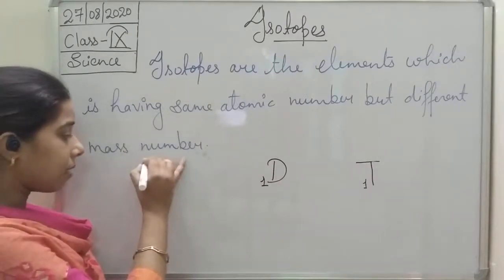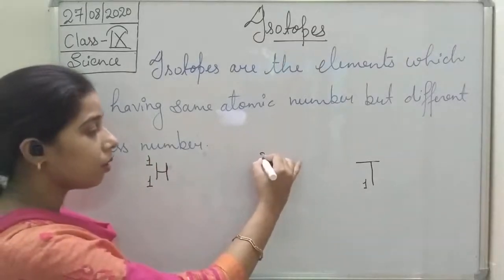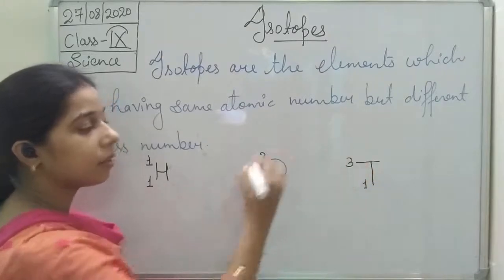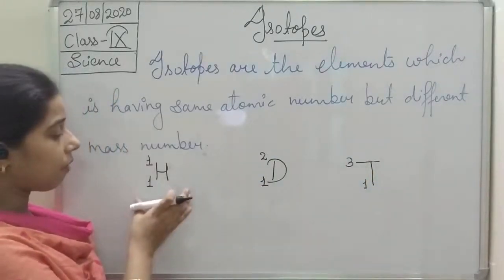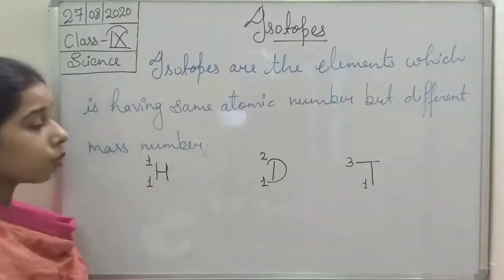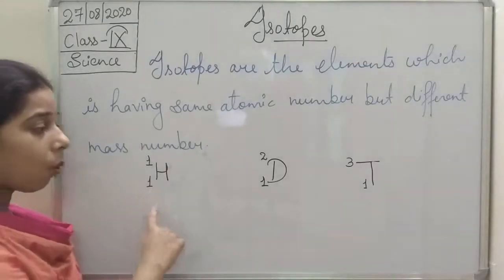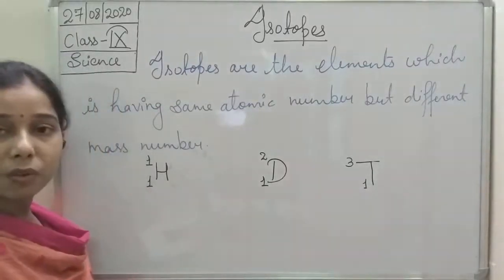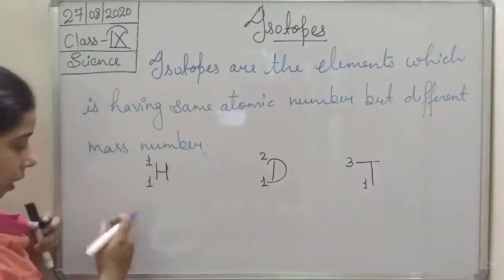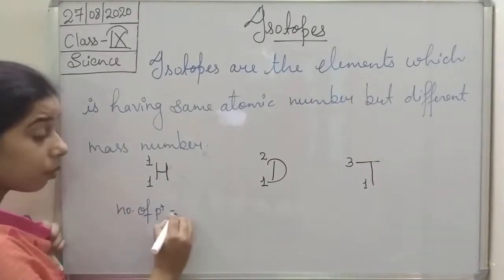The mass number of hydrogen is 1, mass number of deuterium is 2, and mass number of tritium is 3. So all three vary only in the number of neutrons.